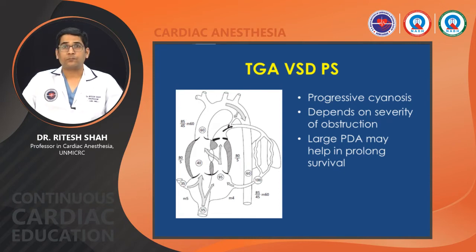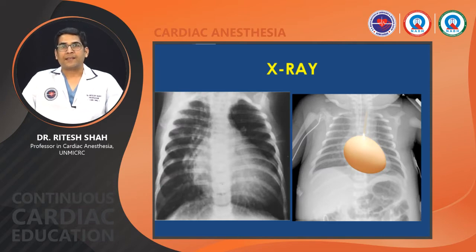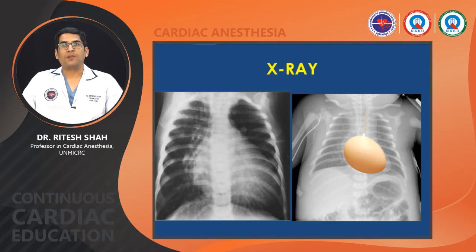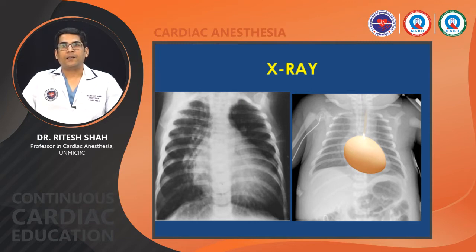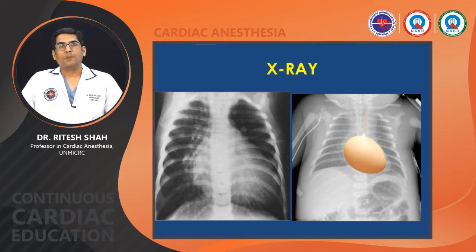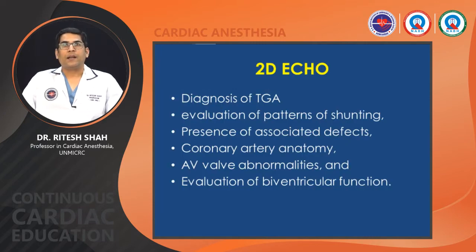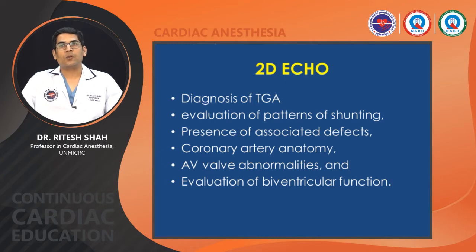On chest X-ray, there is increased pulmonary blood flow with preferential flow to the right lung, as discussed, due to TGA anatomy. There is a narrow vascular pedicle related to the position of the great vessels — aorta is anterior and pulmonary artery is posterior — and absence of thymic shadow. It can present as an 'egg lying on its side' or 'egg on string' appearance. Echocardiography is diagnostic of TGA and helpful for diagnosis of additional defects, biventricular function, and coronary anatomy. Echo-guided BAS is helpful to overcome severe cyanosis in hemodynamic compromise until definitive treatment is done.